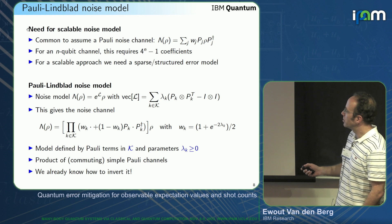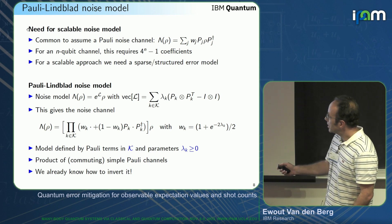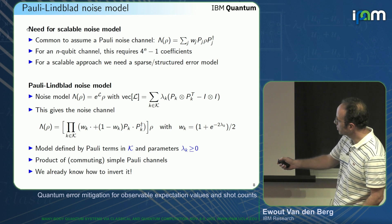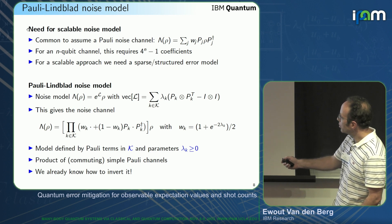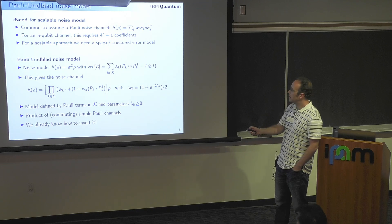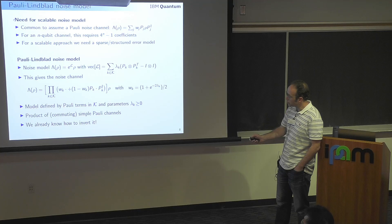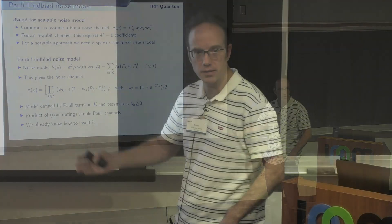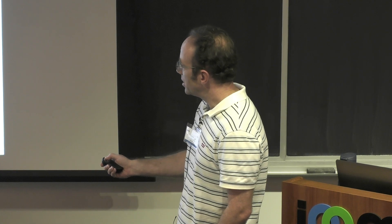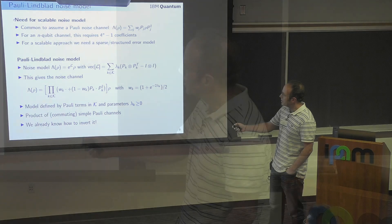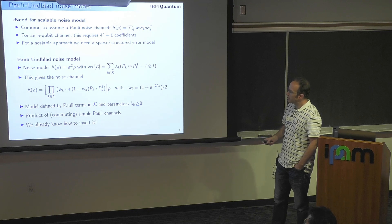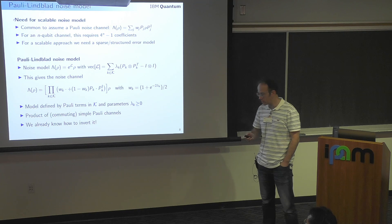The Pauli-Lindblad noise model uses a Lindblad master equation with Lindblad operators consisting of Pauli jump terms. In superoperator notation, you have a sum over a set of Paulis, and include those Paulis in the model with some parameter λ_k. If you do the math, the noise model works out to be a product of the simple Pauli channels seen before, where each factor has weight w_k = (1 + e^{−2λ_k})/2. This model is defined by a set of Pauli terms k with non-negative parameters to ensure the channel is physical.